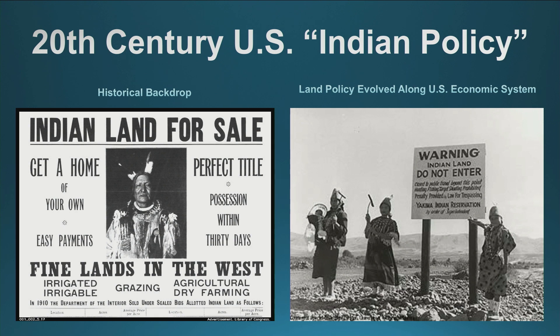The American dream in the 19th century was about each white male person being equal to each other as long as they had a piece of land. So when we take a look at land and address how treaty and removal allowed for the U.S. to offer these poor white males a chance to become landowners, we're following the Jeffersonian dream.